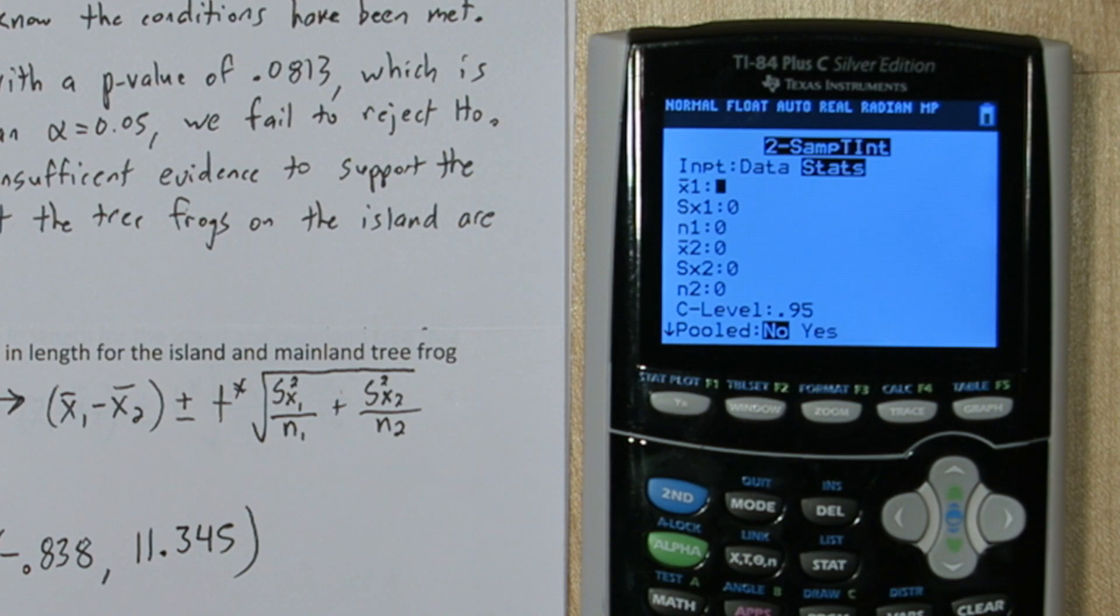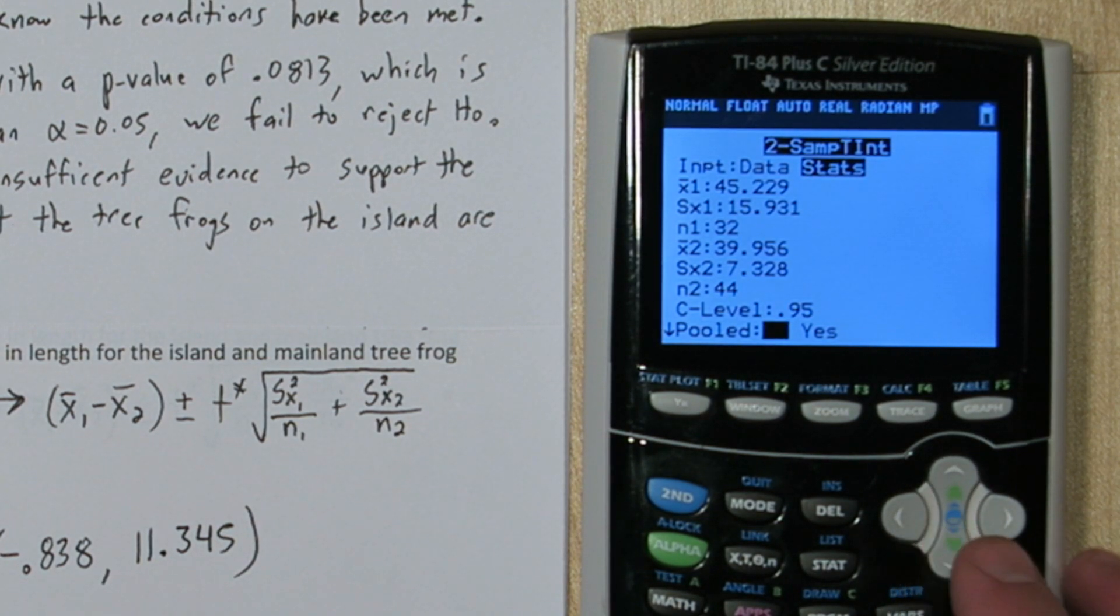I know that my island sample mean was 45.229. And our sample standard deviation for the island was 15.931. Our sample size is 32, and we'll input the mainland information in for variable 2. For confidence level, we'll leave it at 95%.